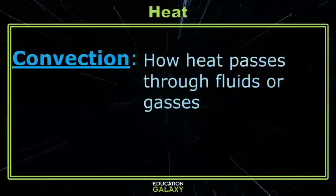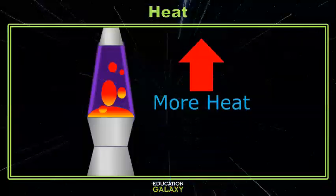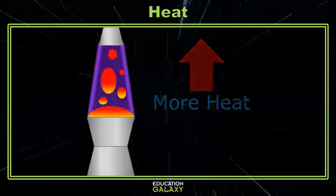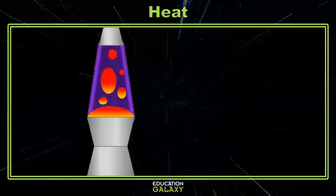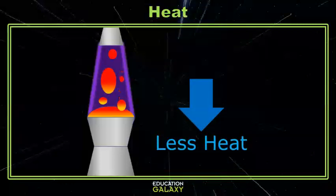Convection happens when we have liquids or gases heating up, which causes the molecules inside the liquid or gas to rise and fall as they heat and cool. A great example of convection is a lava lamp. As the wax lava heats up, it moves up towards the top of the liquid of the lamp. But as it transfers all of its thermal energy and has less heat, the wax falls back down to the bottom of the lamp.